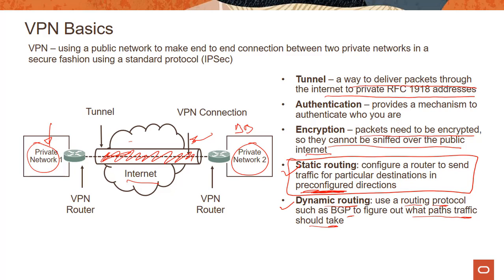When talking about IPsec, there are two modes. Transport mode is where IPsec encrypts and authenticates only the actual payload of the packet and the header information stays intact. Tunnel mode is where IPsec encrypts and authenticates the entire packet — after encryption, the packet is encapsulated to form a new IP packet with different header information. In OCI, we only support tunnel mode, not transport mode — so if this comes up on the exam, remember that.